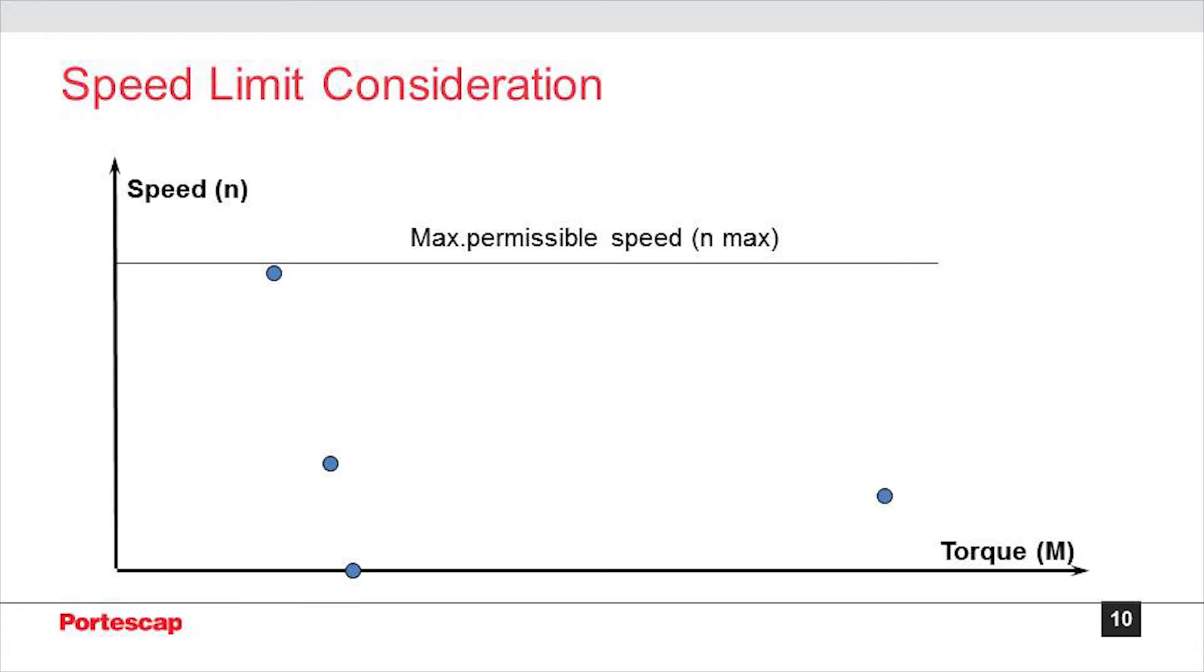Now we'll consider the motor speed against the application. We need to select a motor where the higher limit of its permissible speed would be higher than the operating point in the application. The max permissible speed corresponds to the upper speed limit of the motor and can be found in the catalog.